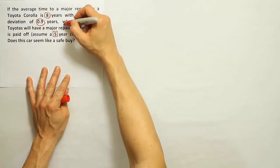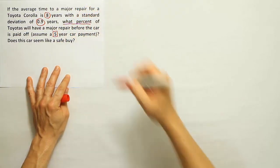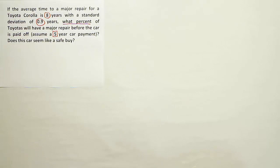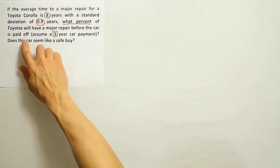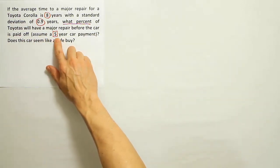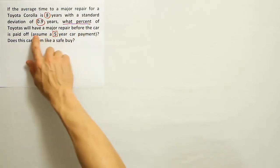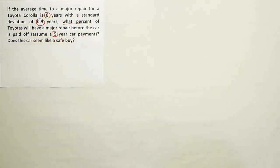They're talking about in the problem what percent of Toyotas will have a major repair before this value of 5 years, right? Because before the car is paid off, the car payment is usually a 5-year payment, and so prior to 5 years, they want to know what percent of Toyotas will have a major repair before that time frame.